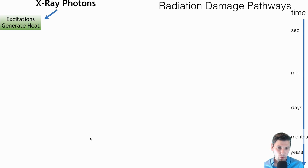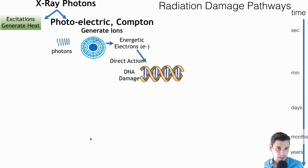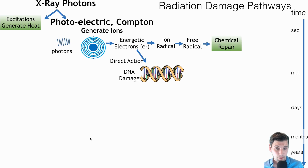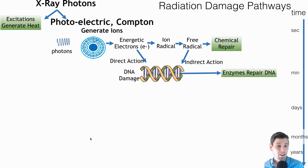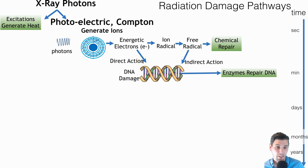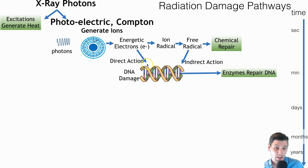We have another video where we go through this chart, because at a high level this is a classical description of the way radiation damages the body — especially x-ray radiation. X-rays interact via Compton and photoelectric effect, both of which result in energetic electrons that deposit their energy locally. Those energetic electrons can either cause free radicals that damage DNA — called indirect action — or if the electrons damage the DNA directly, that's called direct action.